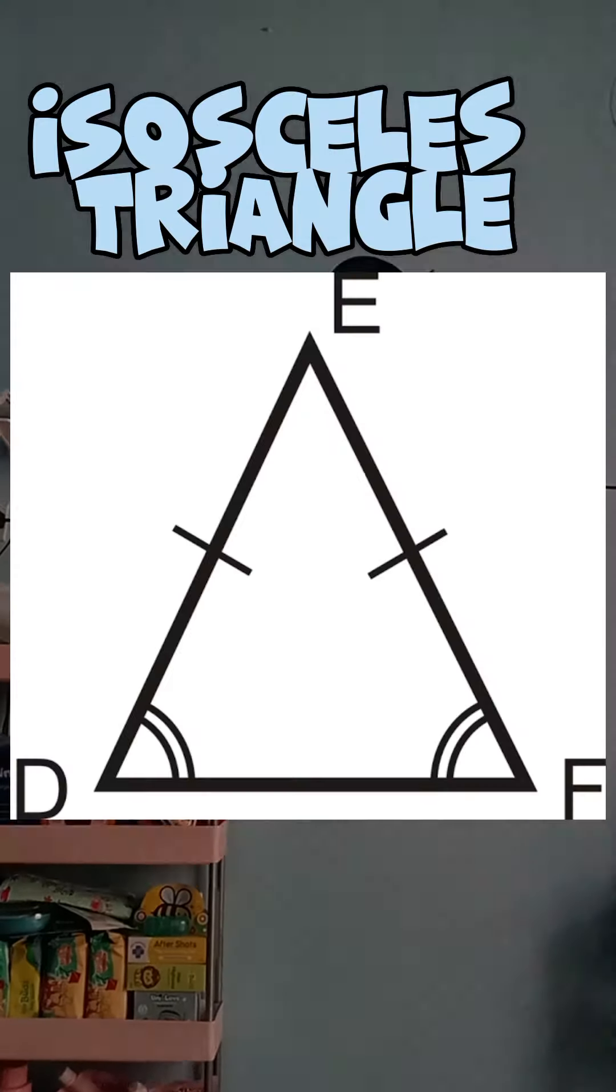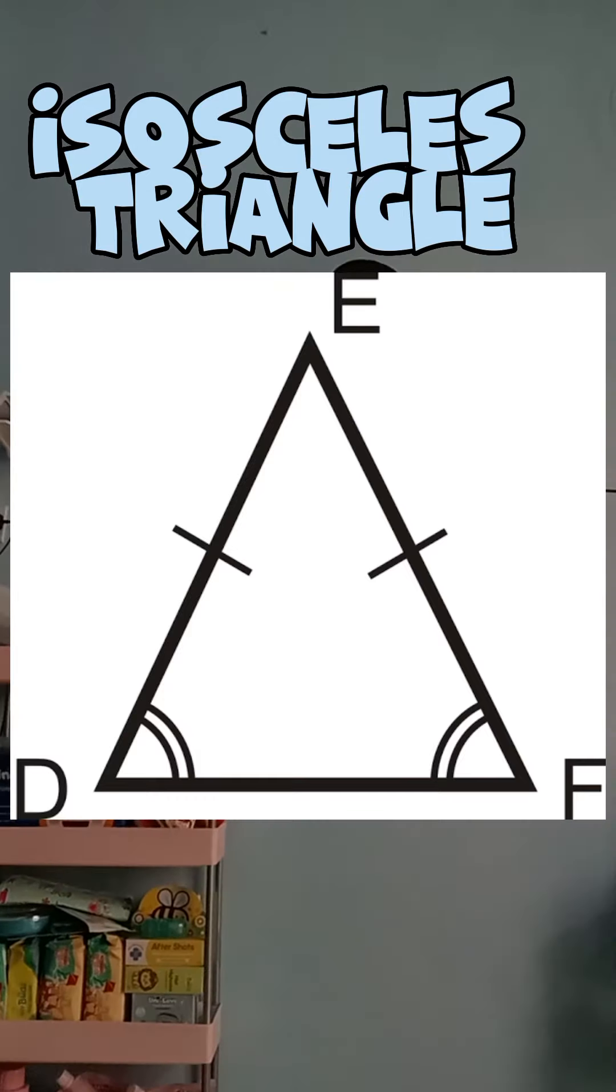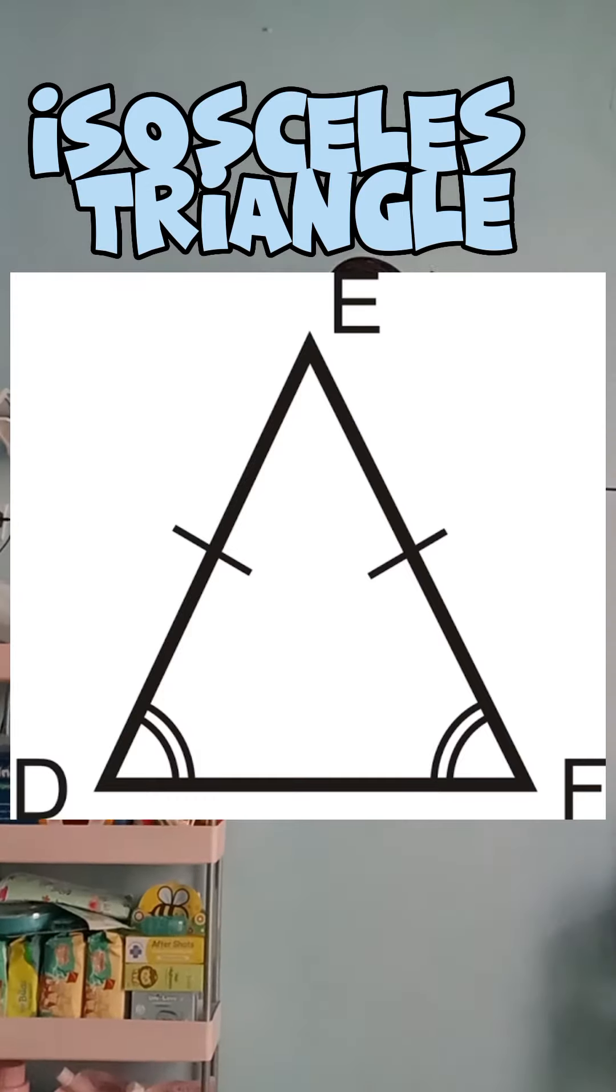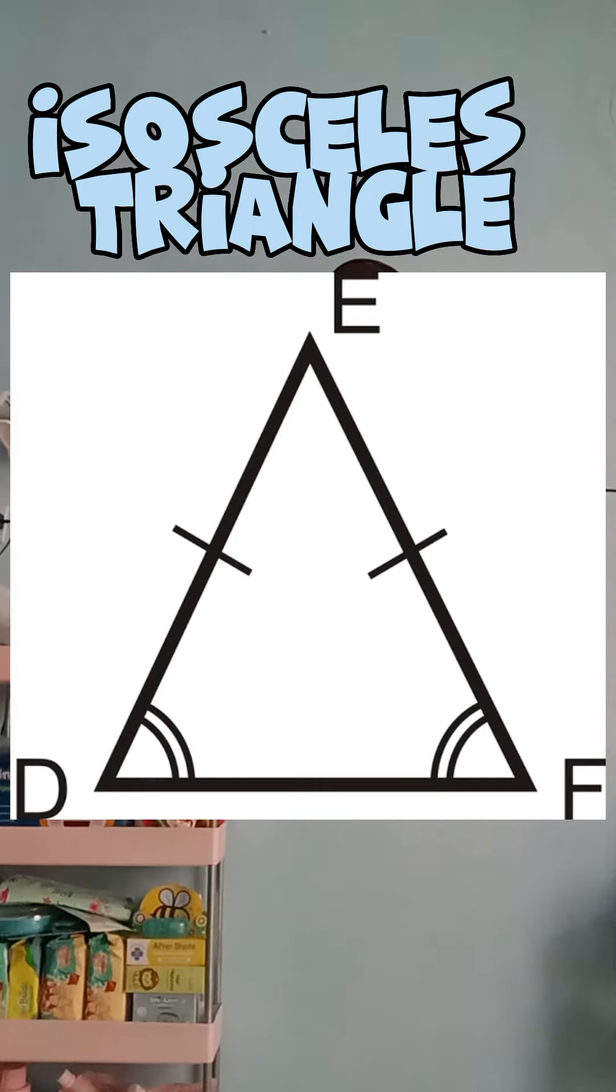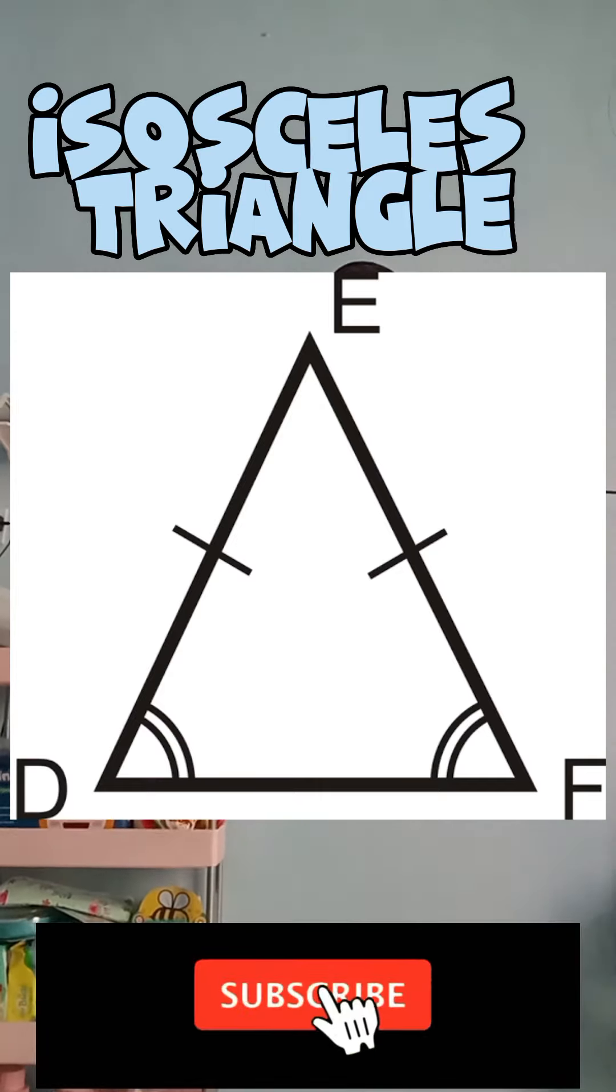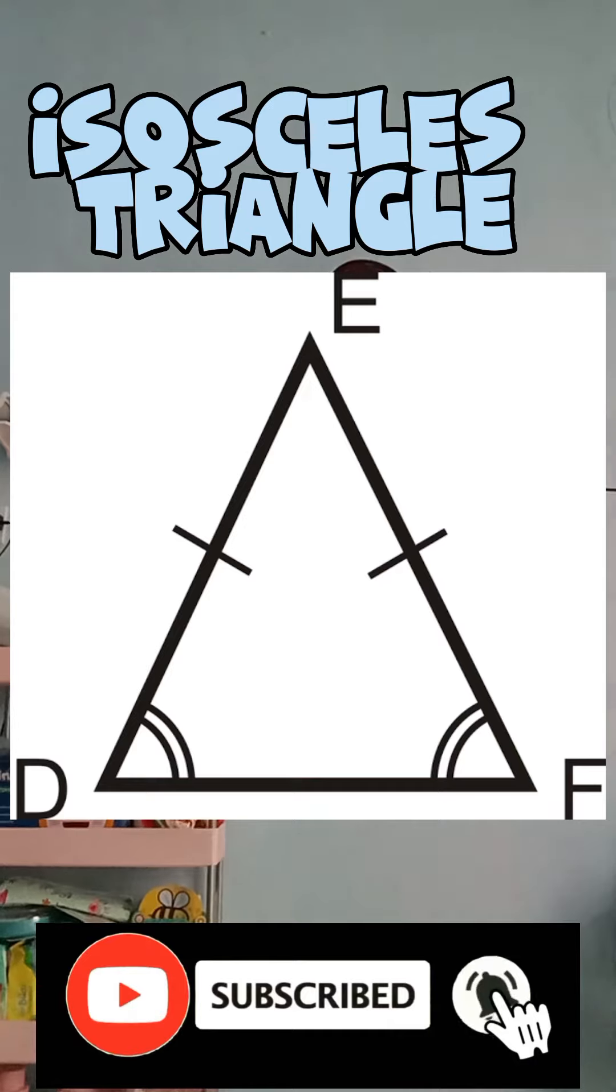An isosceles triangle is a triangle that has at least two sides of equal length. This means that two angles of the triangle are also equal. An isosceles triangle can be either acute, right, or obtuse, depending on the measure of the third angle.